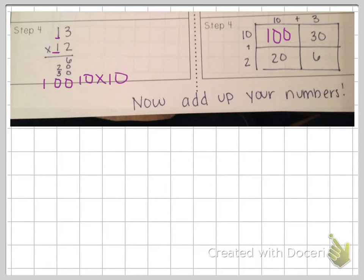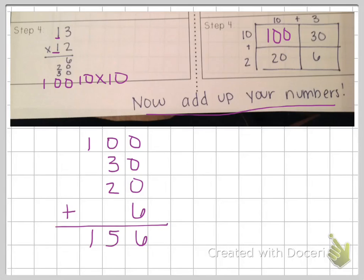And then our final step is to add up your numbers. So either way, you're going to be adding one hundred, plus thirty, plus twenty, plus six. So six, three plus two is five, and one. So no matter which way you solve it, you'll get a hundred and fifty-six as your answer.